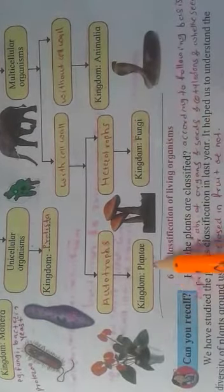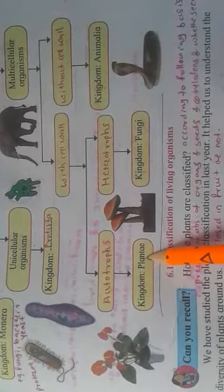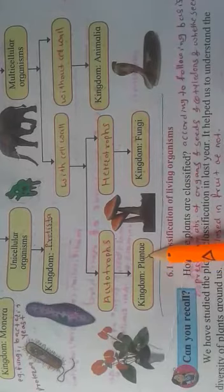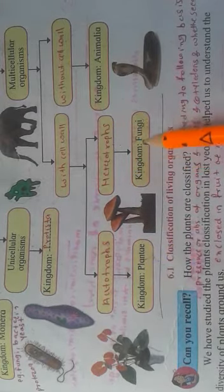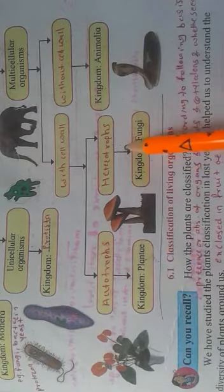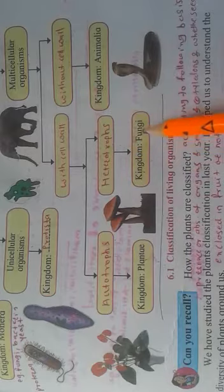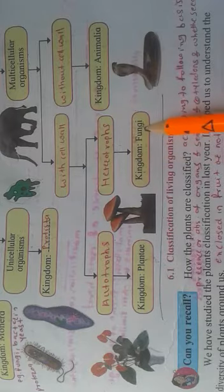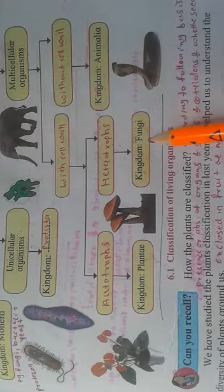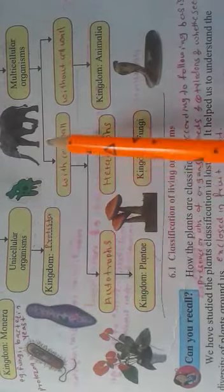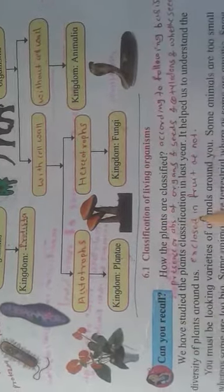Those with cell wall are classified into autotrophs and heterotrophs. Kingdom Plantae are the autotrophs — they prepare their own food by means of sunlight and carbon dioxide through a process known as photosynthesis. Kingdom Fungi are the heterotrophs — they don't prepare their own food; they depend on other sources for their nutrients. This classification you have already studied in your earlier classes.